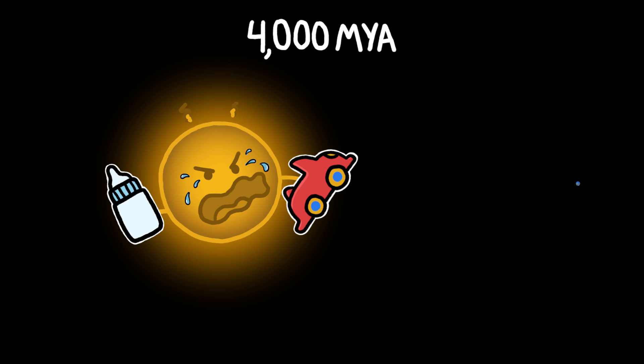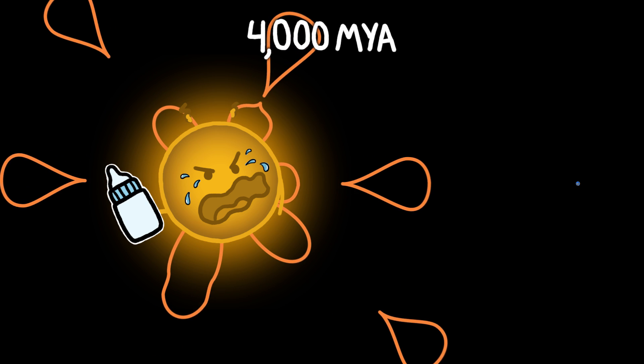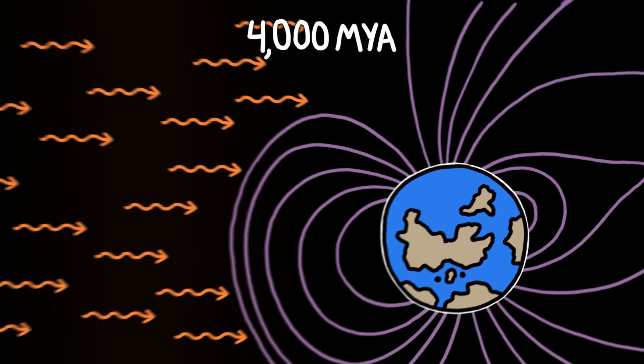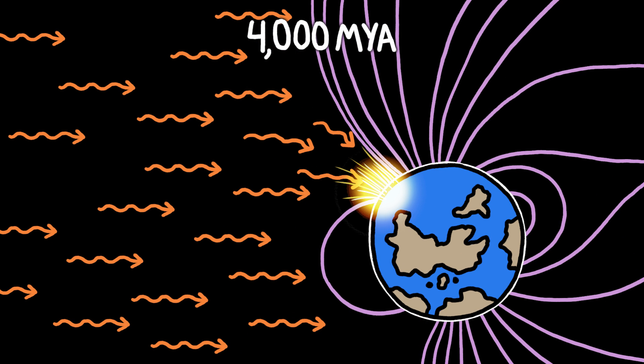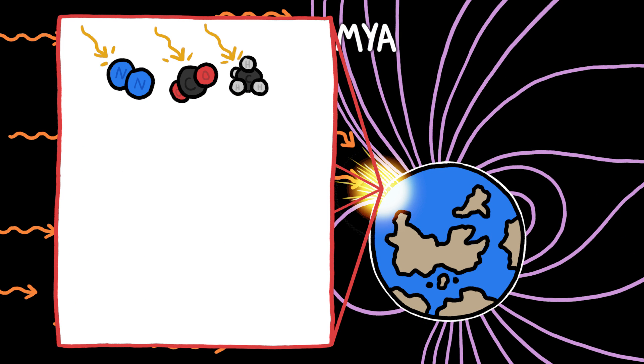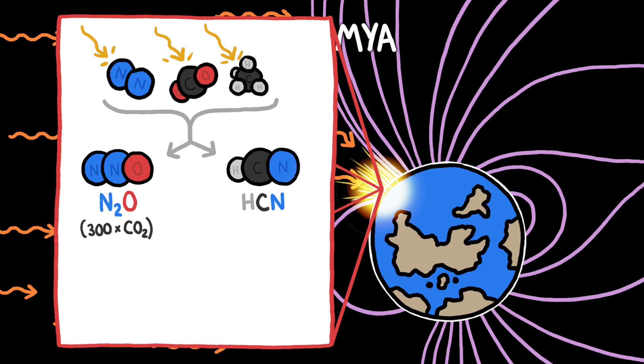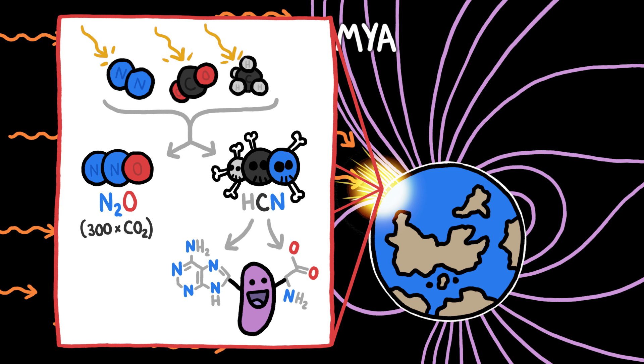But back when our sun was a baby, it threw much wilder tantrums, hurling violent streams of high-energy particles that interacted with Earth's primordial atmosphere much more frequently to create large amounts of two gases: nitrous oxide, a greenhouse gas 300 times as powerful as carbon dioxide, and hydrogen cyanide, a poison that can ironically also help produce some basic building blocks of life.